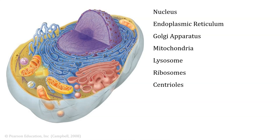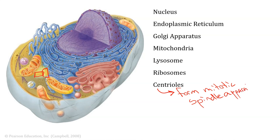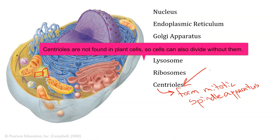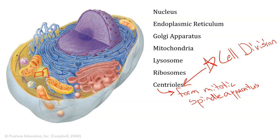There are also centrioles—barrel-shaped structures that hang out until the cell is ready to divide. These form what's known as the mitotic spindle apparatus: a network of tubes that push and pull chromosomes to different parts of the cell. The centrioles play the biggest role in cell division—when a cell gets ready to divide, we go to the centrioles and they make it happen.